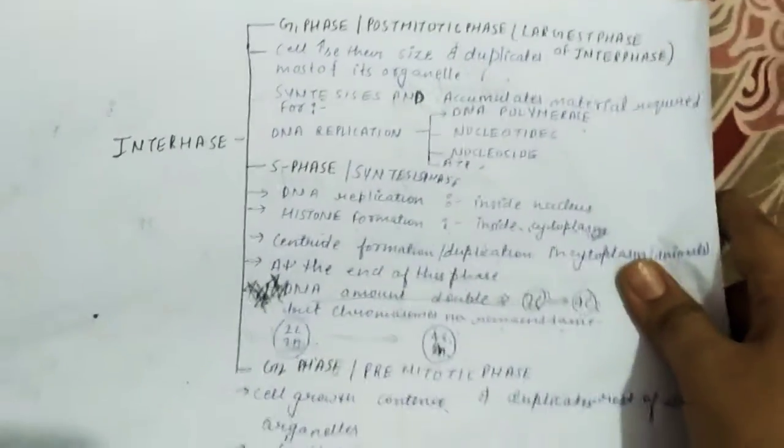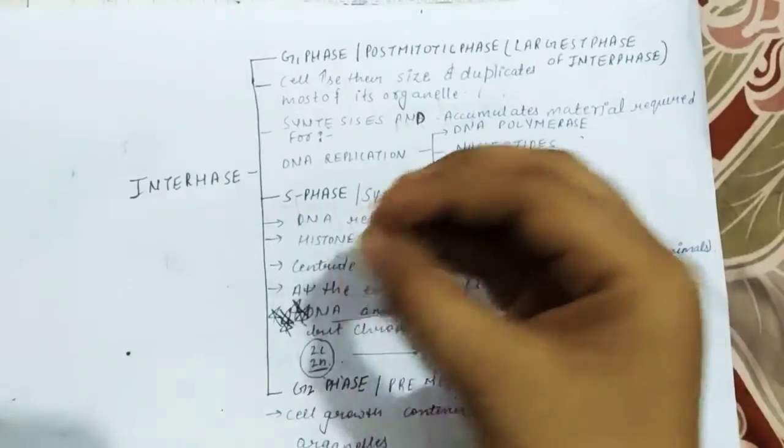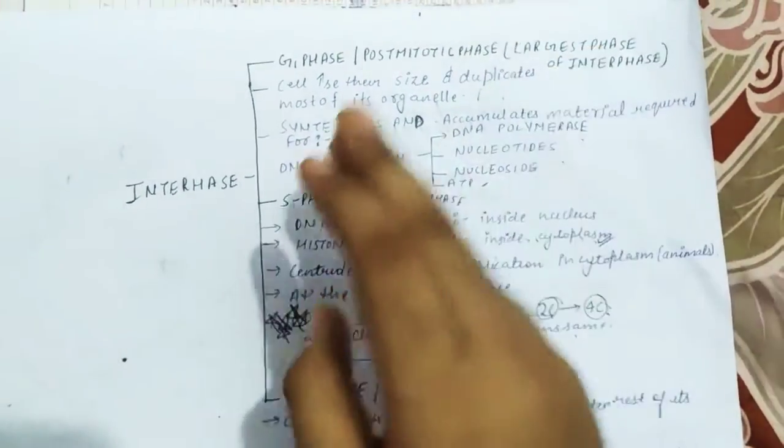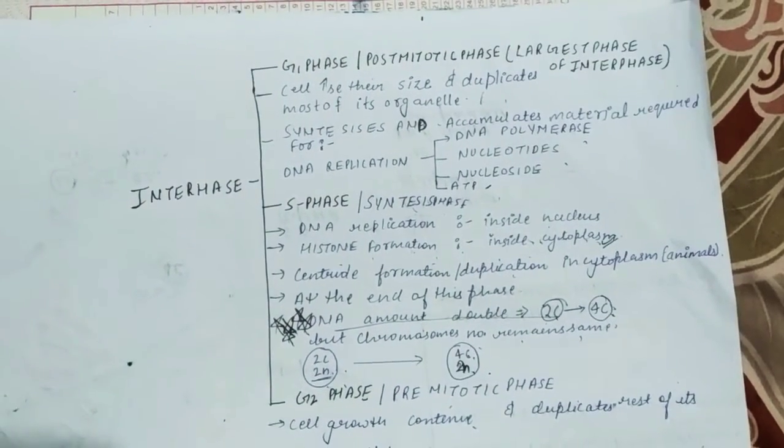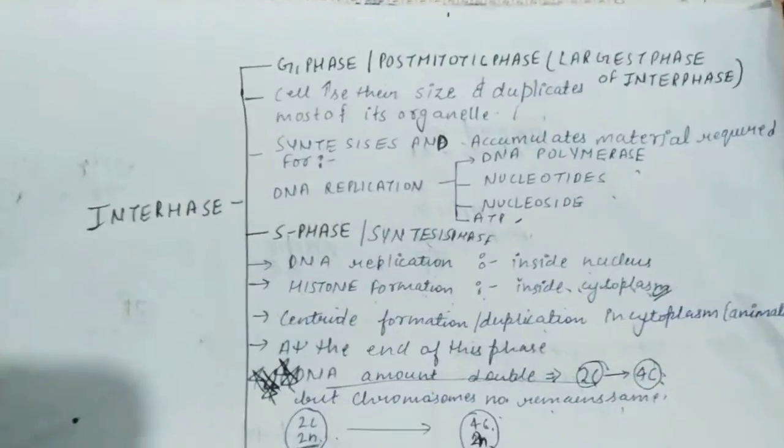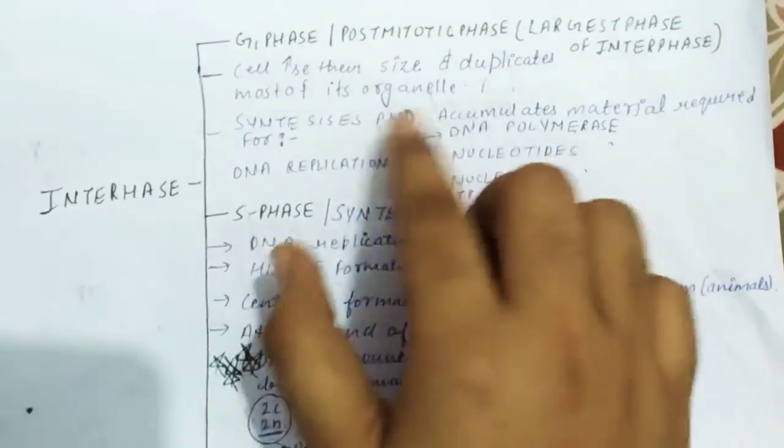In G1 phase, the cell increases in size, preparing for DNA replication. DNA polymerase, nucleotides, and nucleosides—all necessary for DNA replication—will be synthesized in the first gap phase.